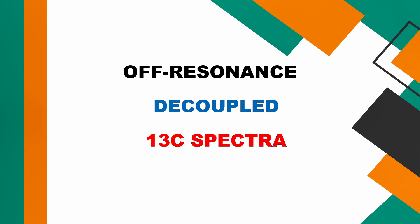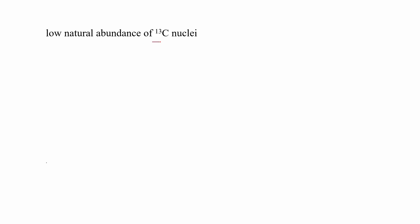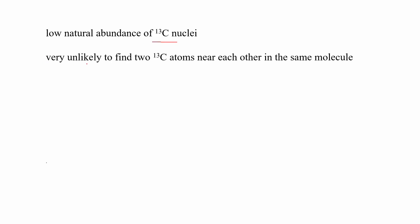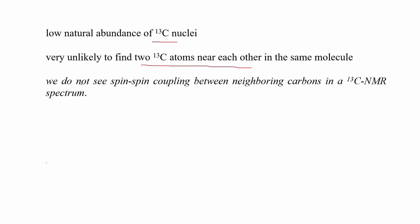I have already uploaded a video about broadband decoupling technique in carbon-13 spectra in this channel. Because of the low natural abundance of carbon-13 nuclei, it is very unlikely to find two carbon-13 atoms near each other in the same molecule. And so, we do not see spin-spin coupling between two neighboring carbon atoms in a carbon-13 spectrum.